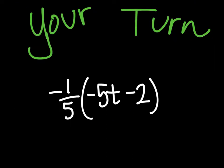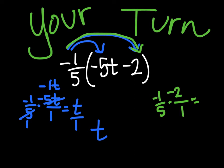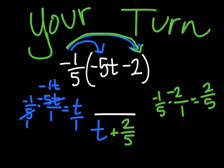Your turn. Go ahead and copy this problem down, pause the video, work through it, and then turn the video back on when you're ready to check your answer. The first multiplication gives a negative times a negative, which is positive 1t over 1 — just plain t. Then negative 1/5 times negative 2: simplify before you multiply — a negative times a negative is positive 2/5. So t + 2/5 is your final answer. You could also write 1t + 2/5.